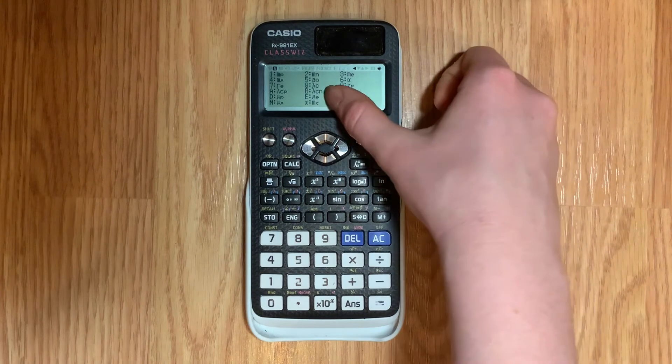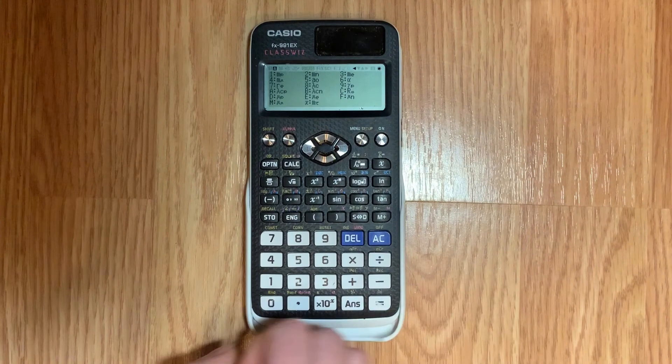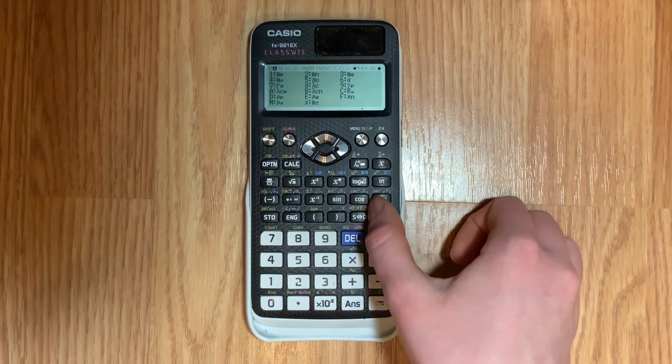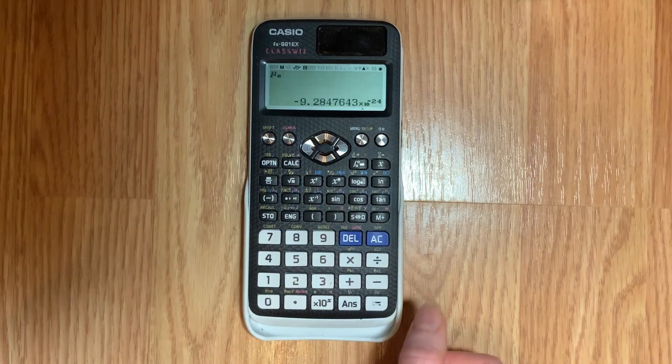So if you want this one mu e which is next to the big letter e you'll push alpha and then you'll push cosine because at the top of cosine is that pink letter e and there you go there's your constant.